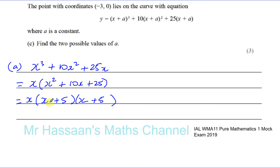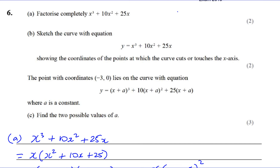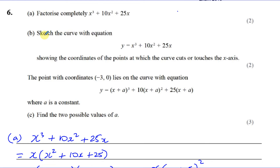Two numbers that multiply to give 25 and add to give 10 - that's 5 and 5. So x plus 5 times x plus 5. You can write it as x(x + 5)² - either form is perfectly fine. Then part B says: sketch the curve with equation y equals x cubed plus 10x squared plus 25x, showing the coordinates of points at which the curve cuts or touches the x-axis.